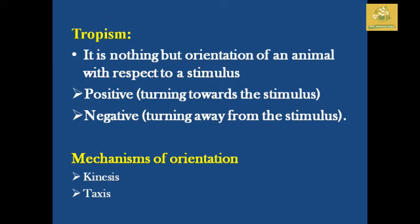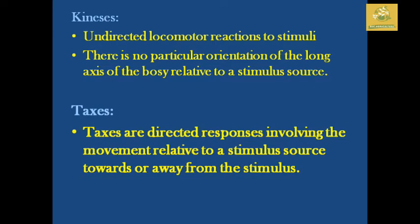There are two types of tropism: the positive one and the negative one. The positive one turns towards the stimuli, while the negative one turns away from the stimuli, which acts as a defensive mechanism in some insects. This mechanism of orientation is known as kineses as well as taxes.